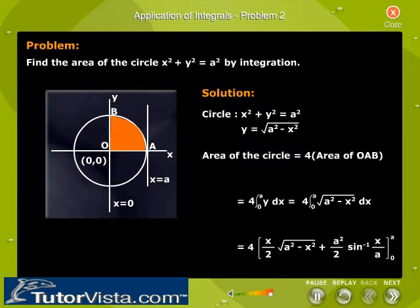The area of the circle is 4 times the area of sector OAB, because of symmetry, which is equal to 4 times the integral from 0 to a of y dx, which is equal to 4 times the integral from 0 to a of the square root of a squared minus x squared dx.